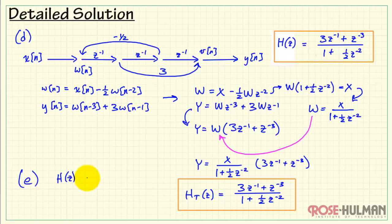Now finally in part e, we want to compare the results we had from the original flow graph to this transposed version. More specifically, are these two actually equal? And if you study the h of z and the h sub t of z, we find that they are in fact the same. And that's exactly what we expect based on the flow graph transposition theorem.